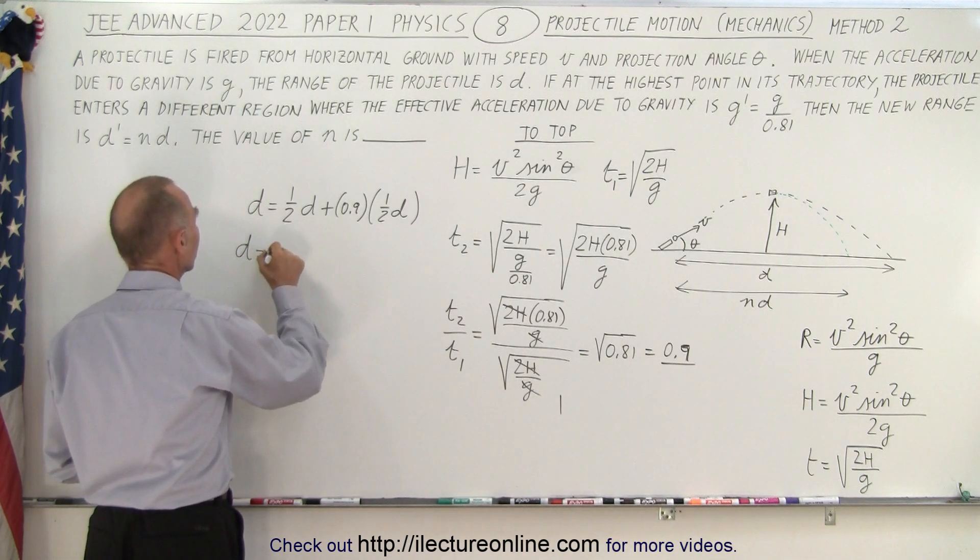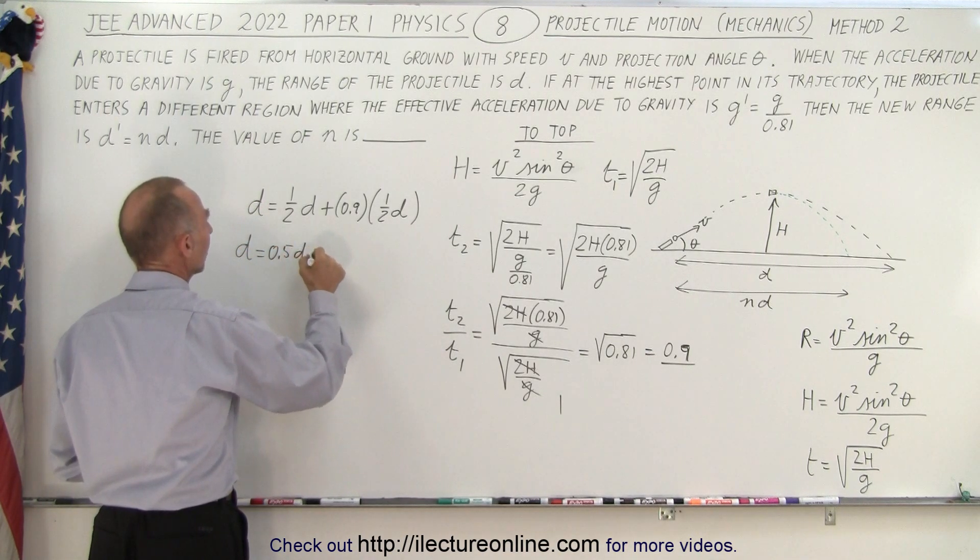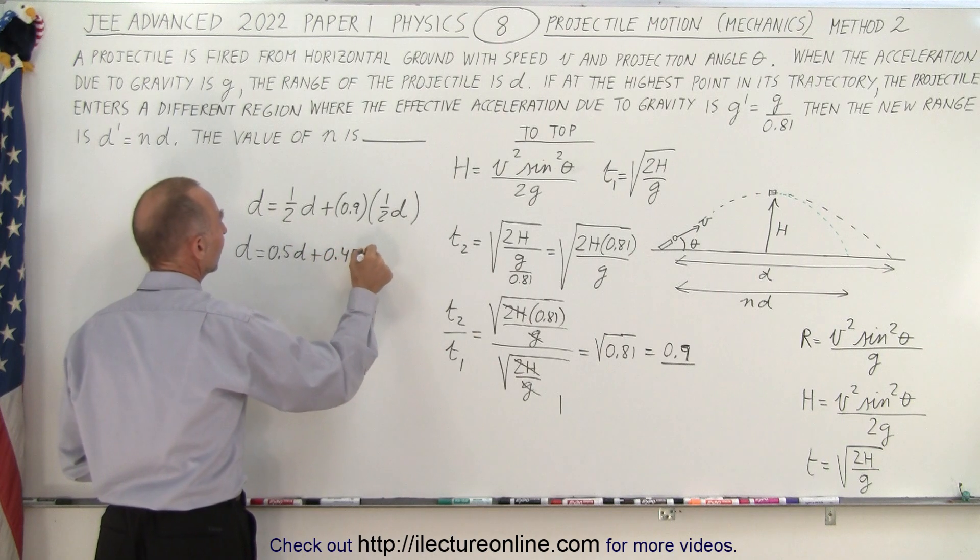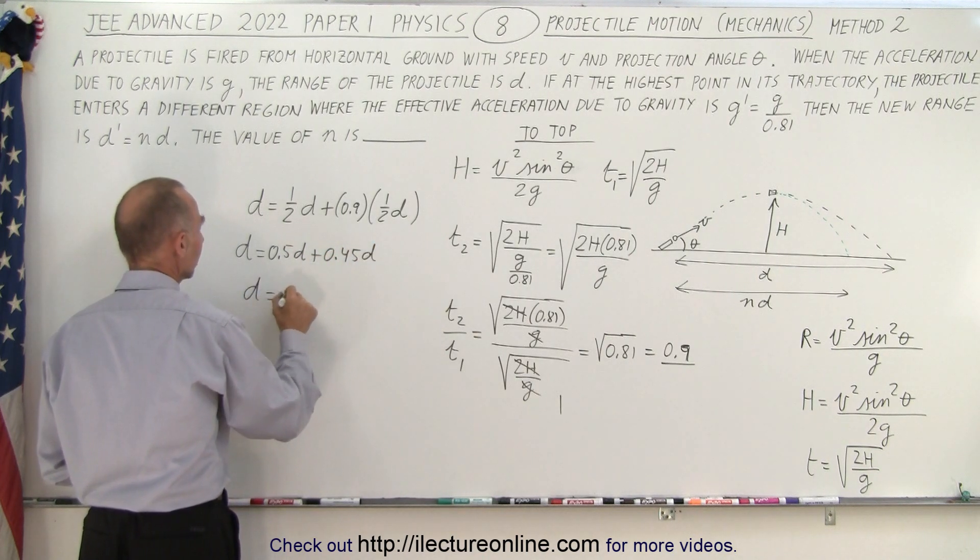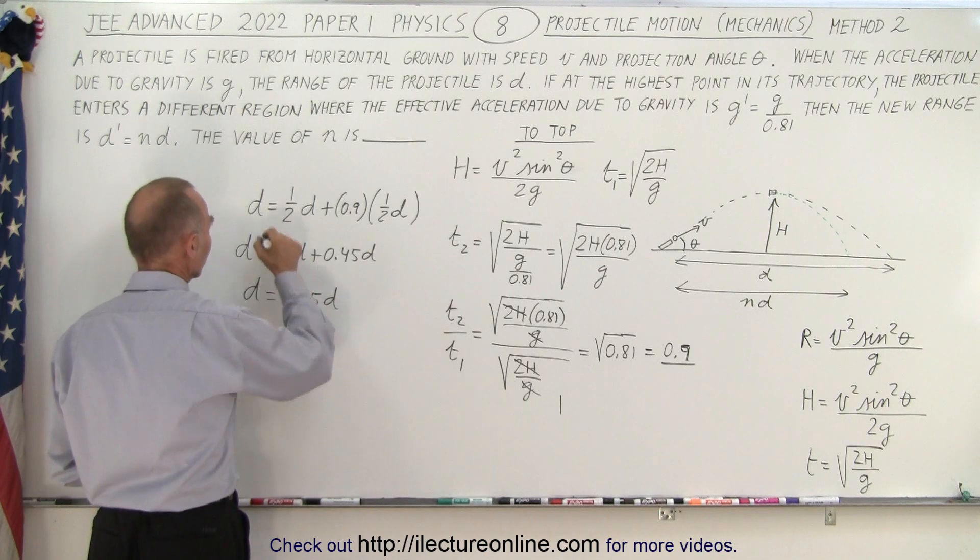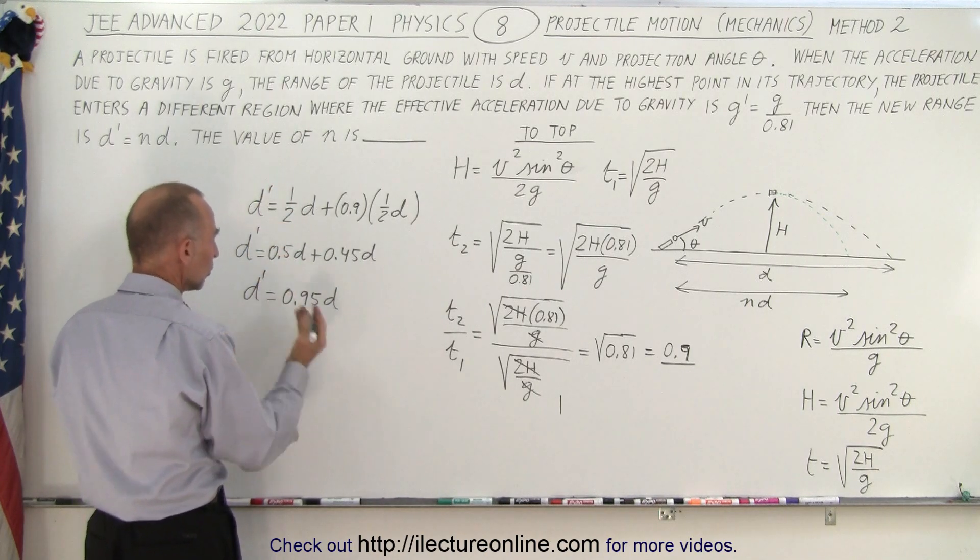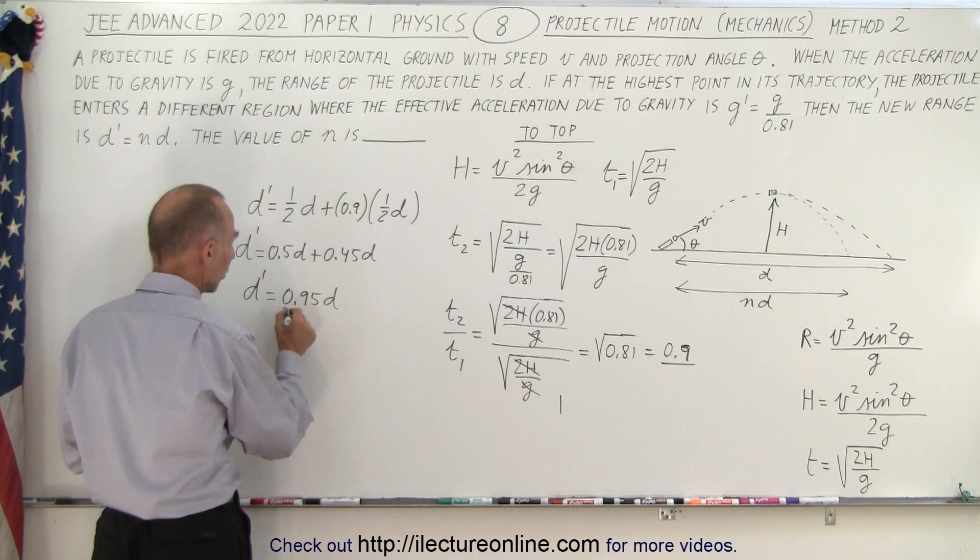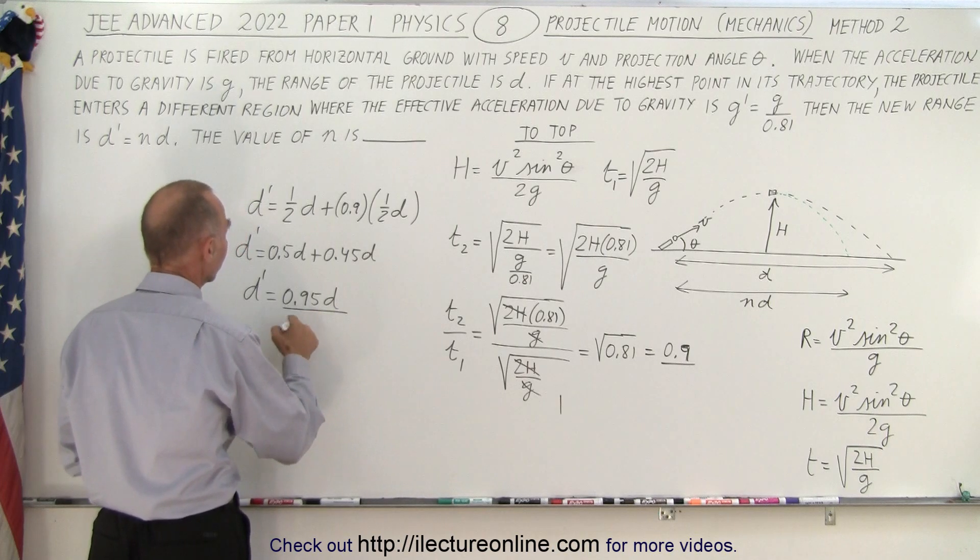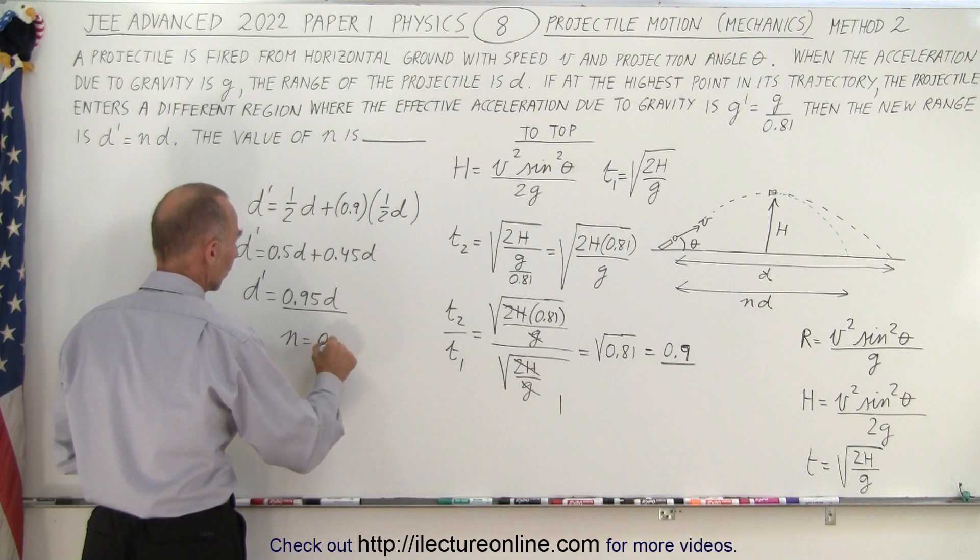So this becomes d is equal to 0.5d plus 0.45d, and therefore d is equal to 0.95d. And of course we're looking at d prime, the new distance, and notice that's 0.95 the old distance, so therefore n equals 0.95.